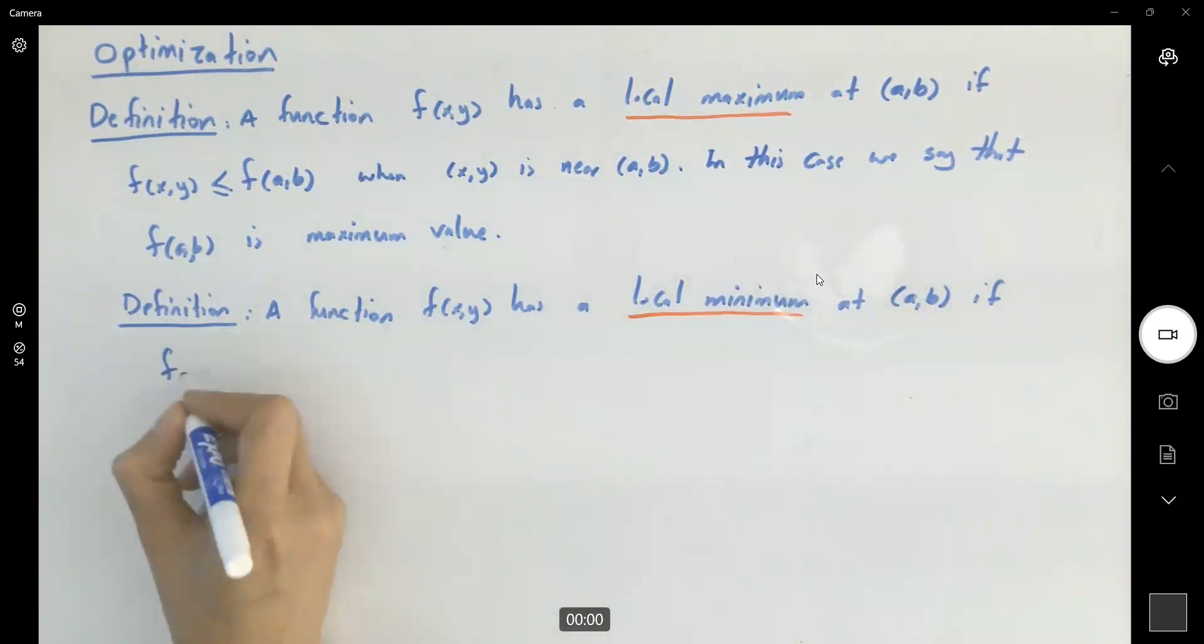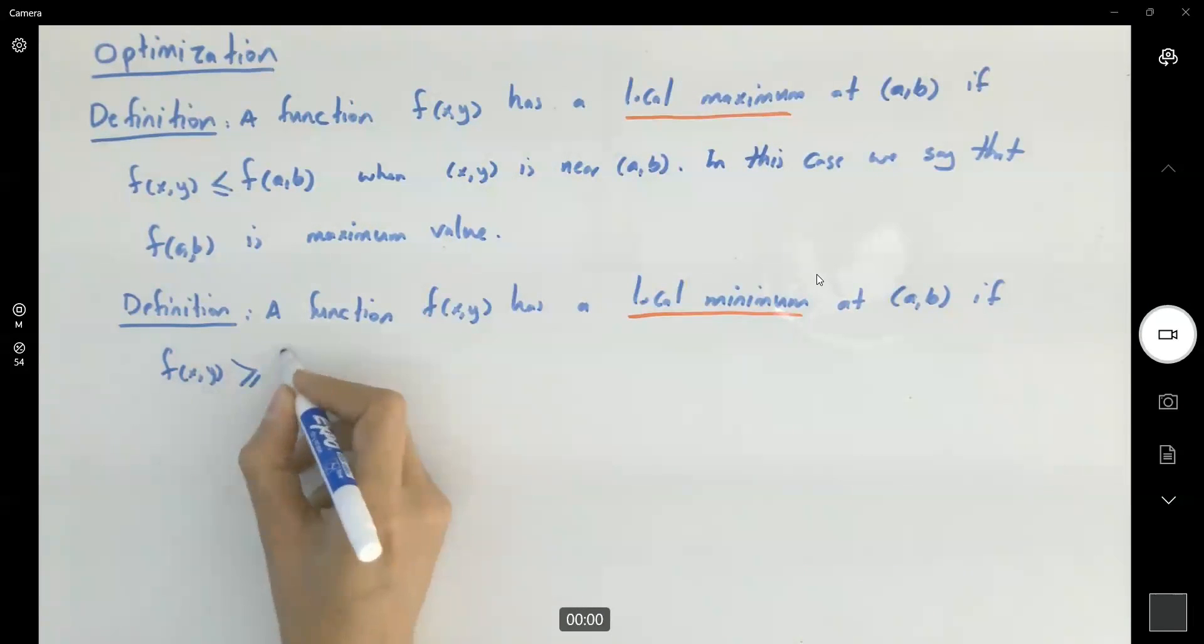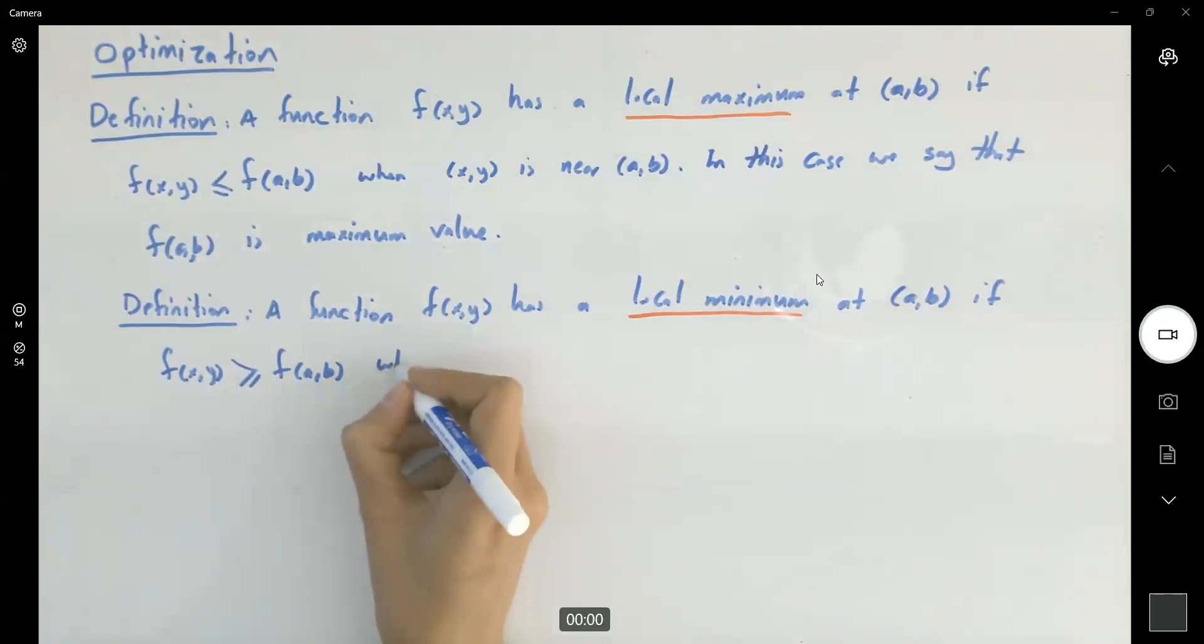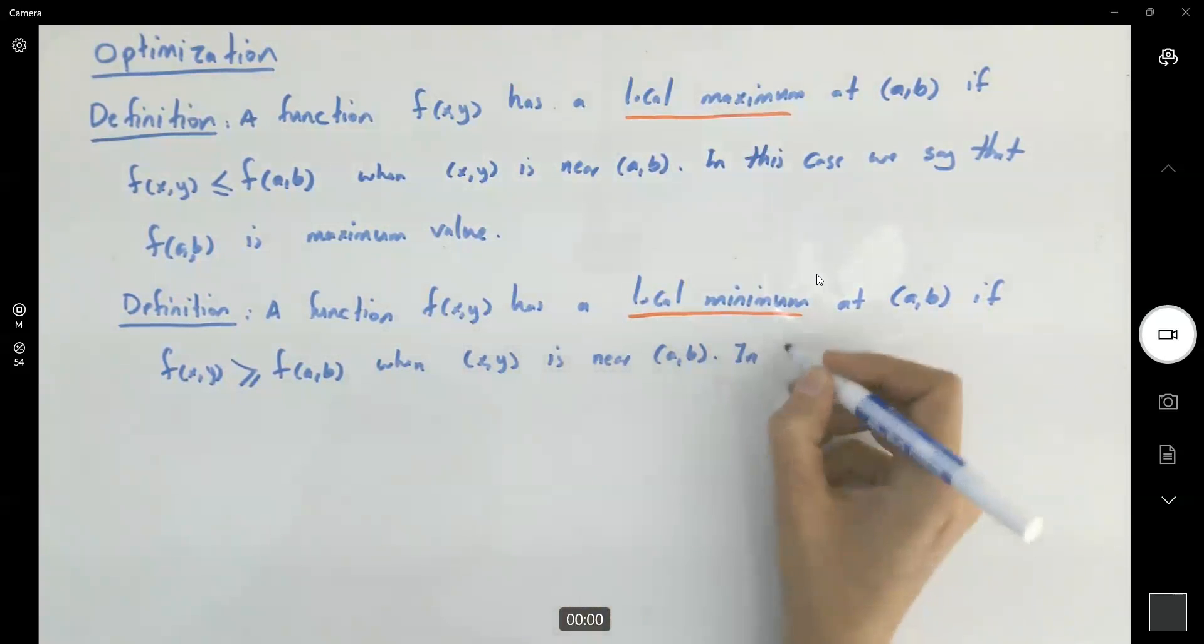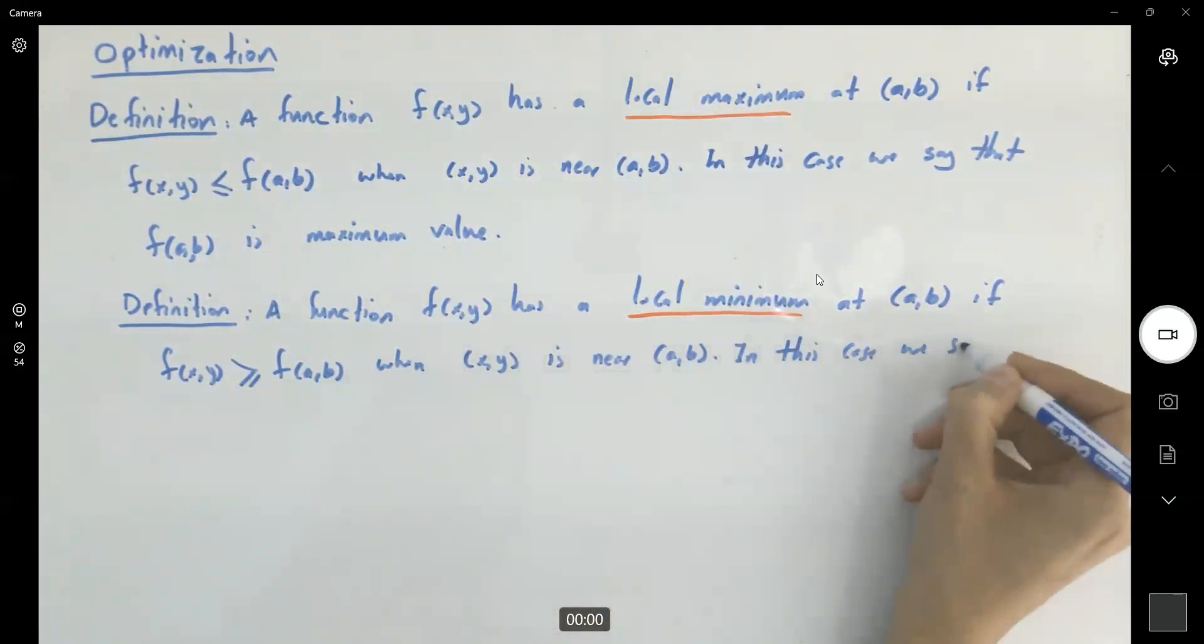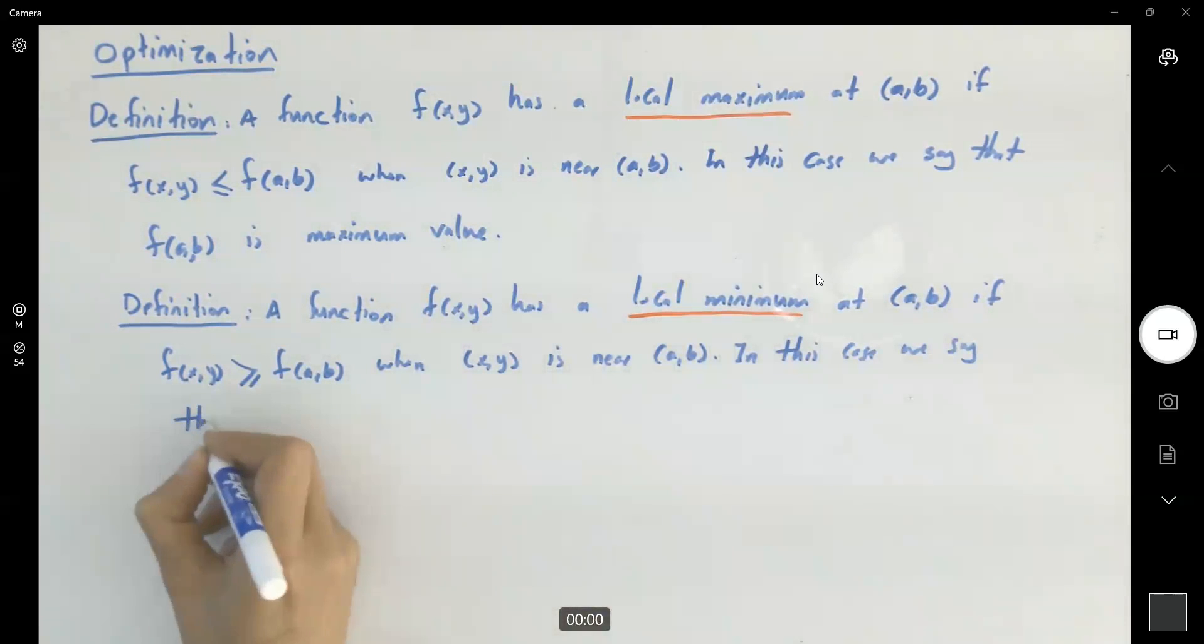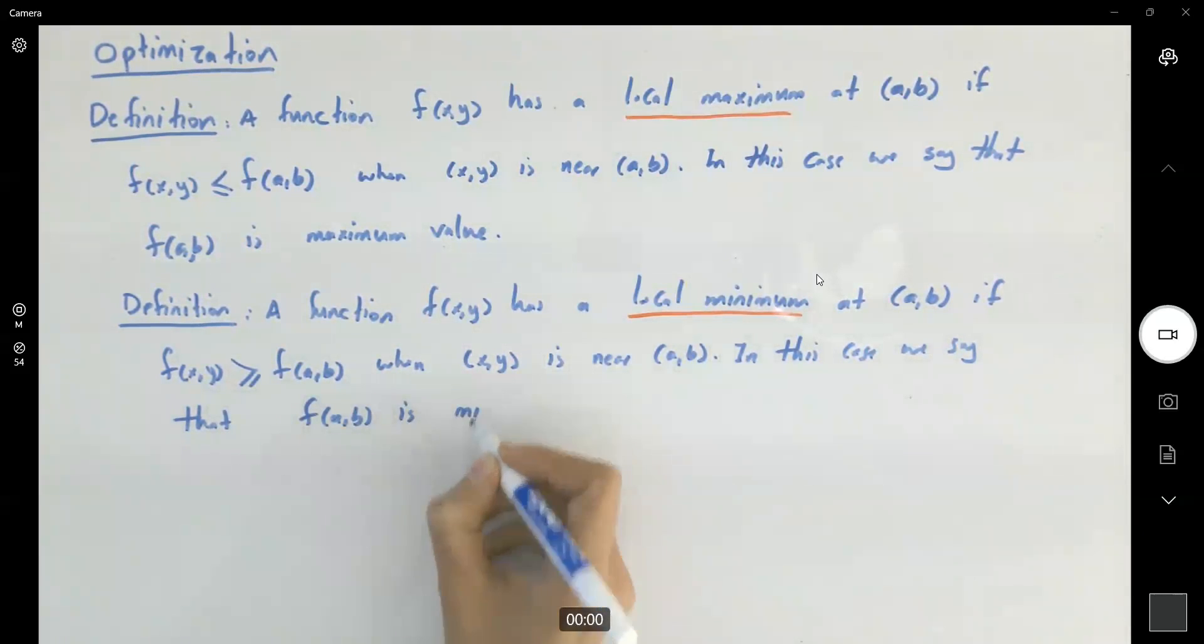If now the z values at any nearby point are larger than or equal to the z value at a and b. Again, these are nearby points, local points. In this case we say that the z value f of a and b is minimum value.